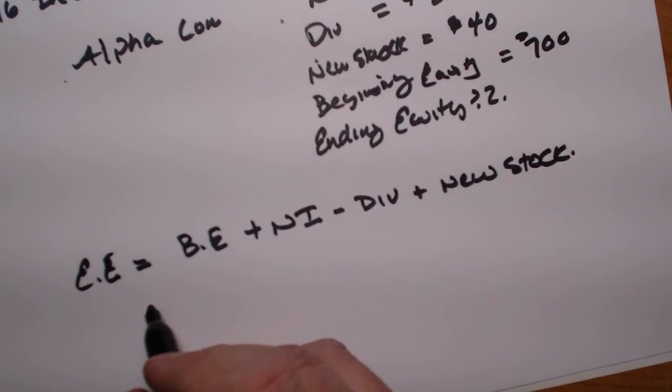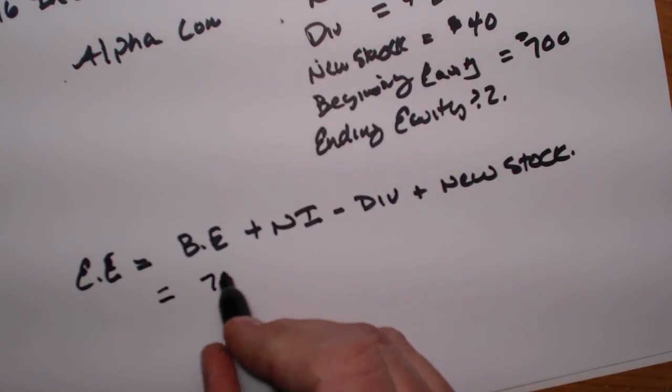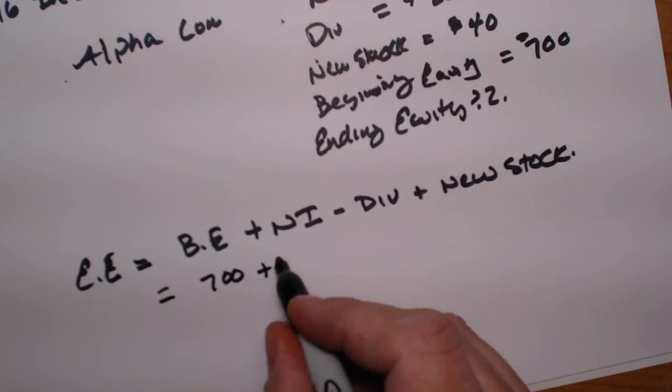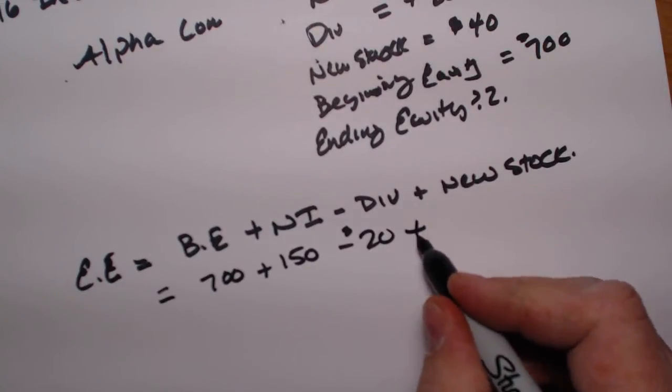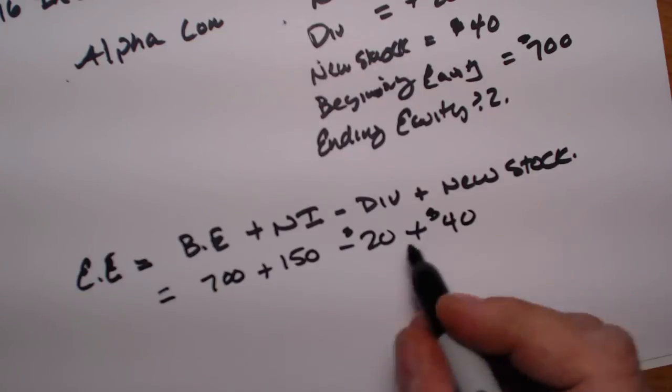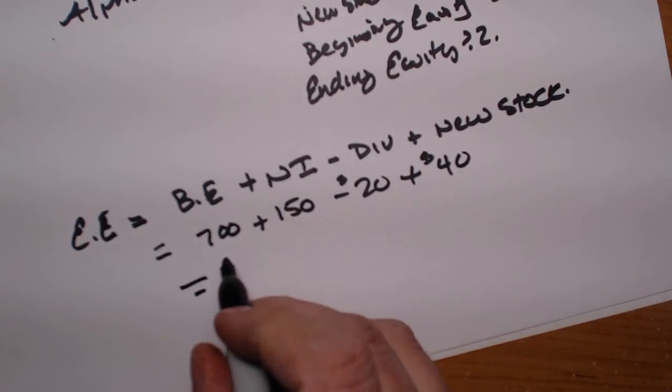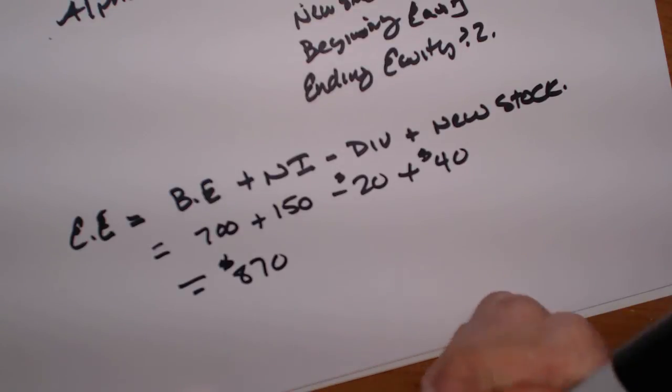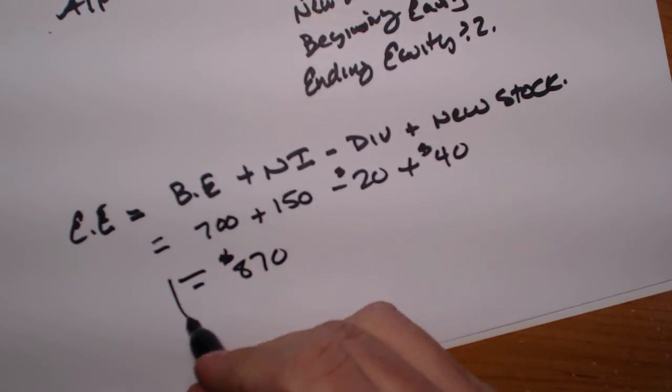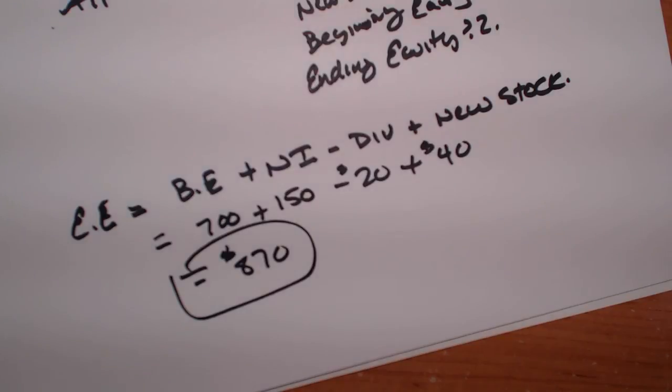So we're going to start off and say our beginning equity was $700, net income was $150, we paid $20 out so it's minus, and our new stock was $40. We add these all together and it comes out to be $870. That is our ending equity and the answer to problem number 16 in the textbook.